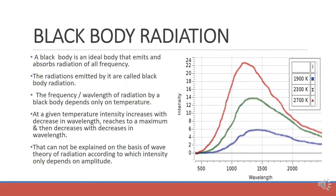Now we will discuss what is a black body. A black body is an ideal body which can emit as well as absorb all frequencies of radiation. It does not reflect any frequency, and that is why it appears black. Radiations emitted by a black body are called black body radiation. The frequency and wavelength of radiation emitted by a black body depends on temperature.